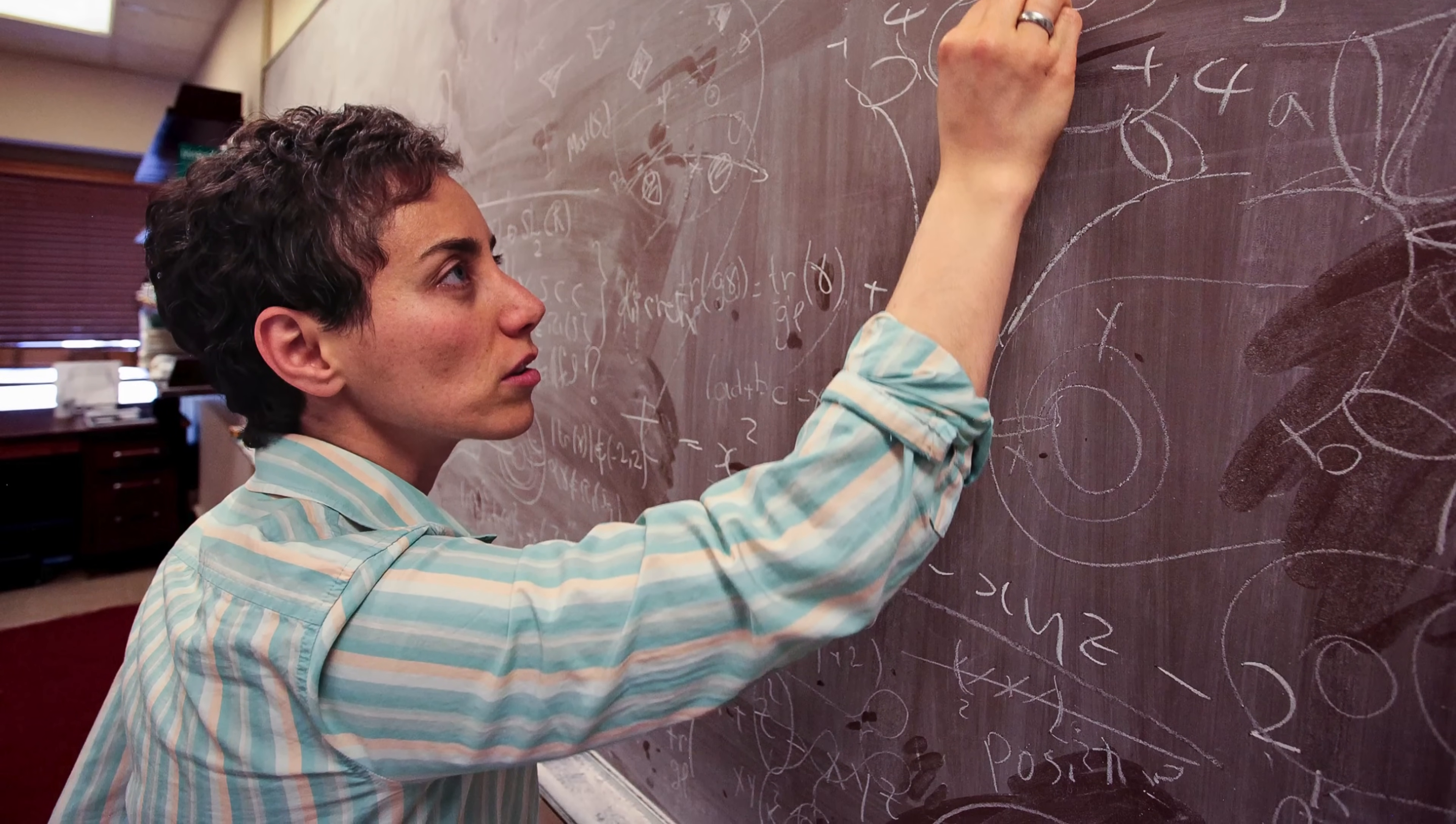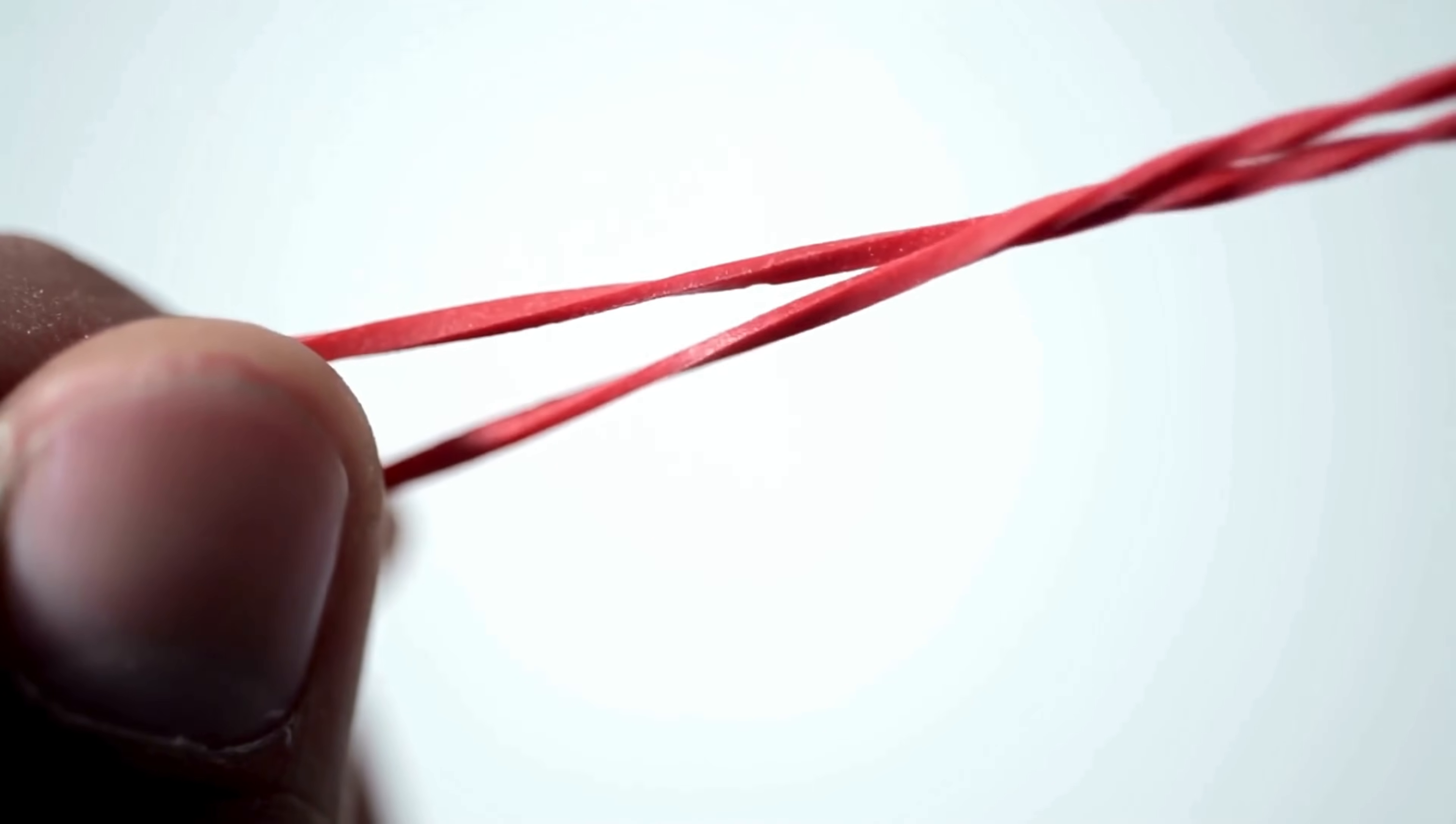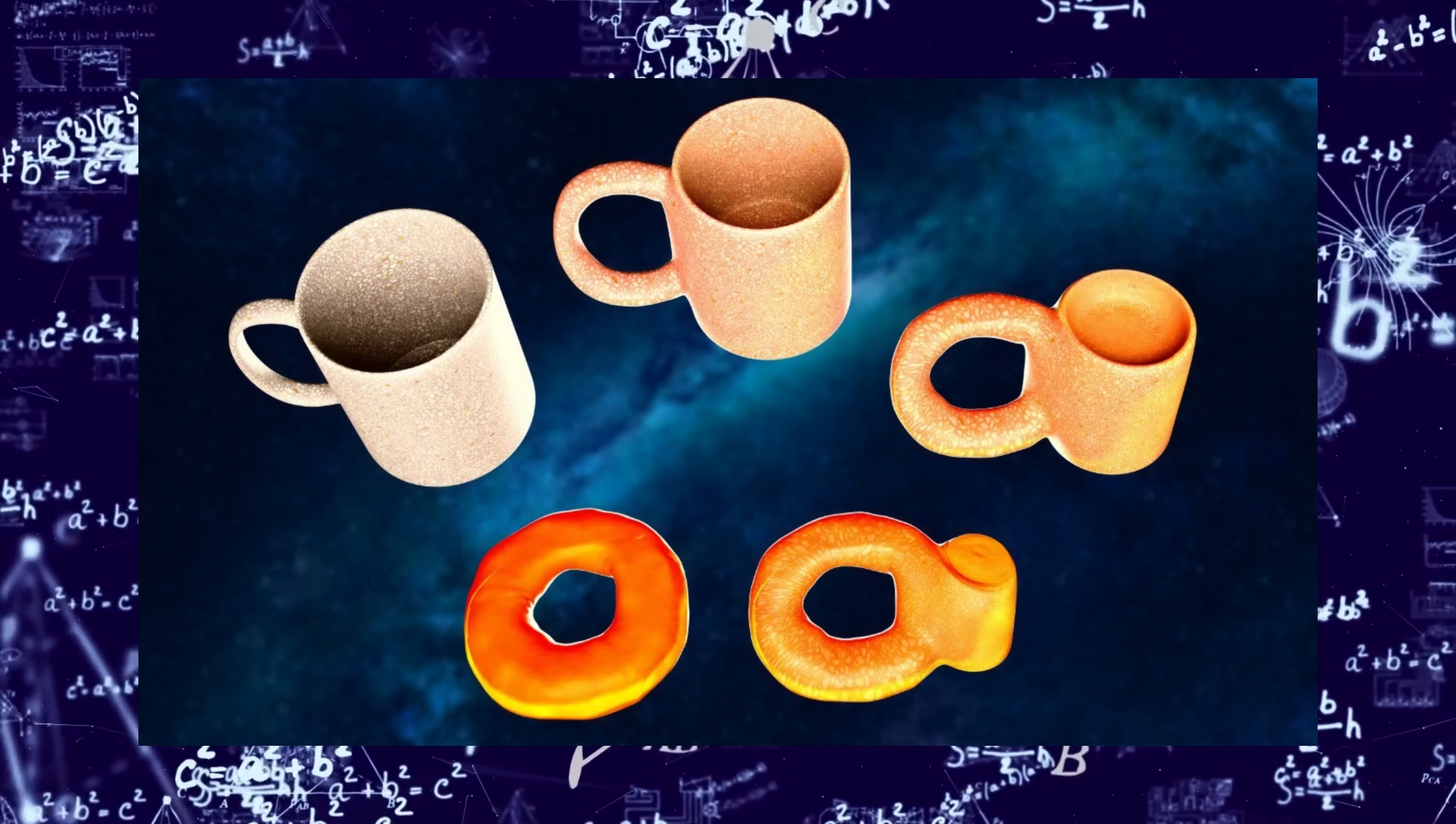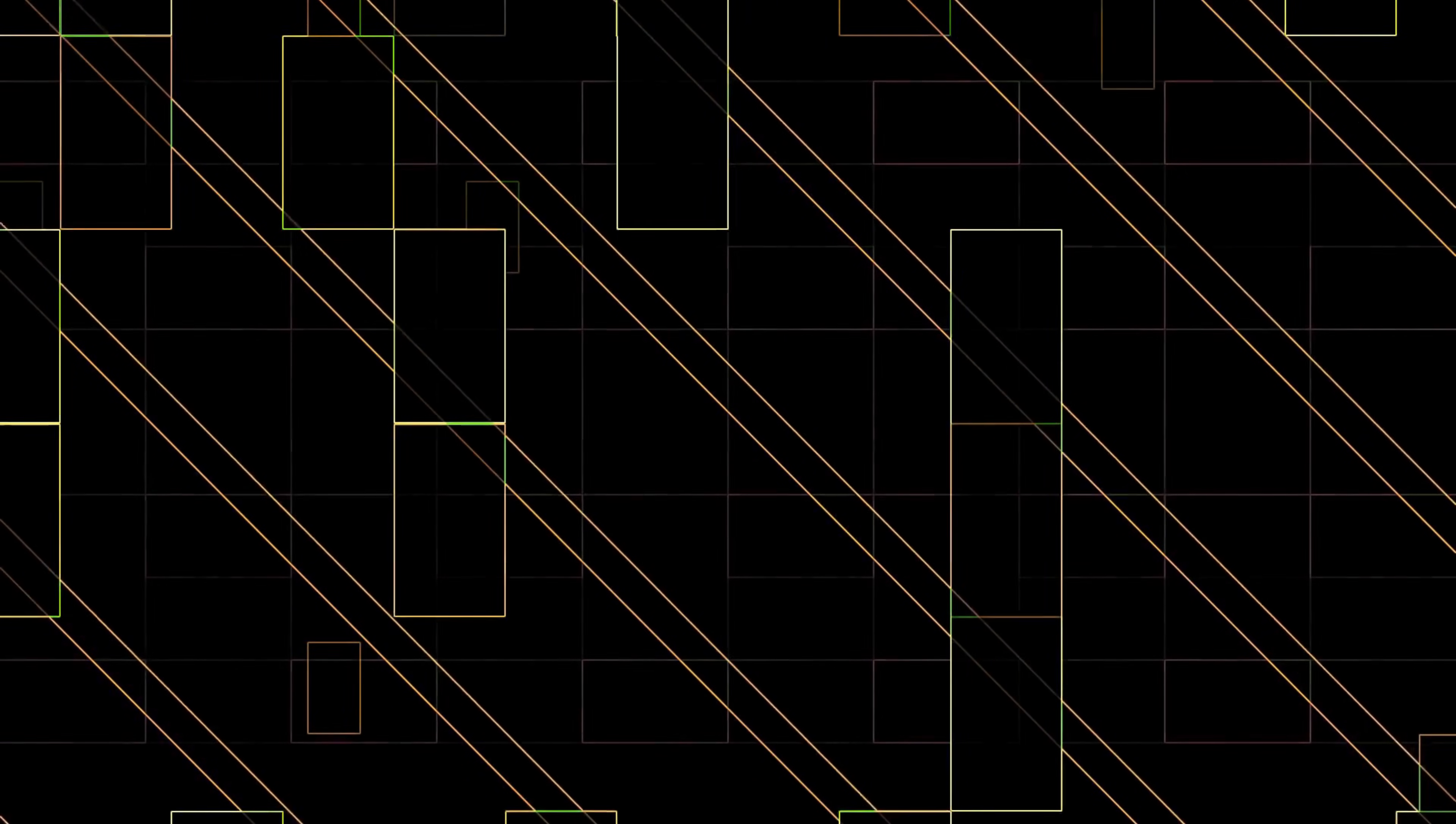Her primary fascination was with moduli spaces. Imagine a flexible rubber donut in your hands. You can stretch, twist or compress it into numerous shapes without tearing the material. Each distinct shape the donut can take represents a unique point within a moduli space. Essentially, a comprehensive catalogue of every possible form a particular object can have. To draw an analogy in two-dimensional space, think about the rectangles that share the same area. Although they may vary widely in length and width, some long and thin, others short and broad, their area remains identical. Each unique length and width combination defines a distinct configuration within their moduli space.